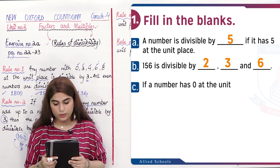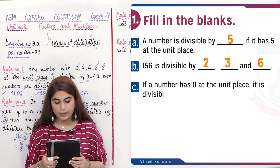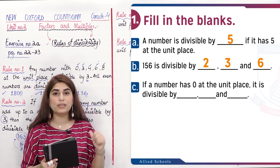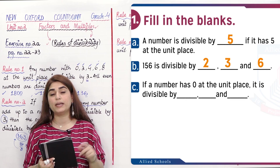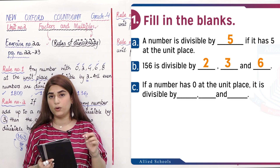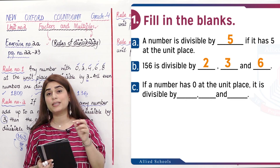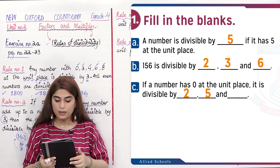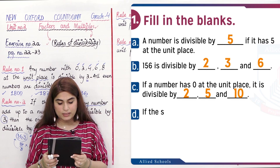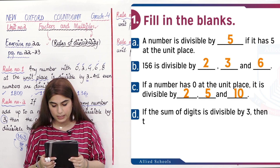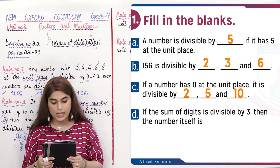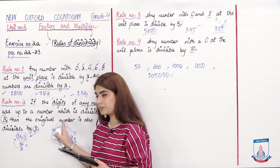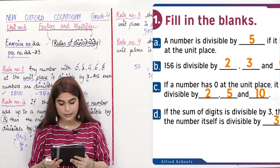Question (c): If a number has 0 at the unit place, it is divisible by dash, dash and dash. If you have read the rules — if it ends in 0, then it is divisible by 2, 5, and 10. Question (d): If the sum of digits is divisible by 3, then the number itself is divisible by 3. You can write 3 here.